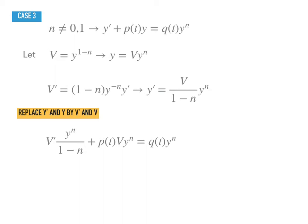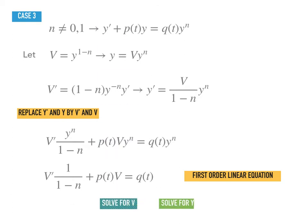So you have v prime y to the n over 1 minus n plus p of t times y to the n equals q of t times y to the n. Well then I can do some simplifications. As you notice, there's y to the n in every single term of the equation, meaning I can divide it by y to the n. Again, you can only divide it by y to the n when y is not 0, to get the next equation here when you have an equation in terms of v and t. So if you look at this equation, it is a first-order linear differential equation. And from here you know that you can solve for v, and you can solve for y once you have v.